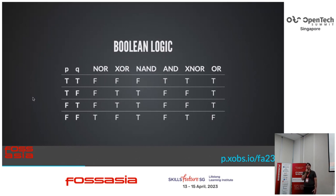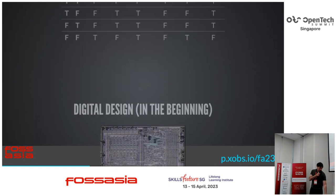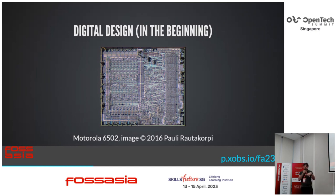A quick side detour on boolean logic: boolean logic underpins most CPUs, most electronics, most digital design. You have your inputs on the left side and all these gates, and a truth table — basically a piece of silicon with inputs on one side and defined outputs on the other in a combinatorial fashion. In the old days, back in the 1970s, when you designed a chip you would design it with a pen and a piece of paper, and a room full of people sitting down for weeks designing each individual transistor.